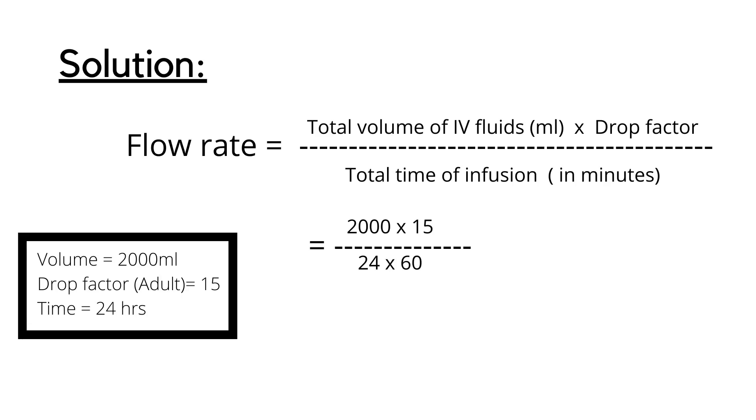So apply the formula: 2000 times 15 divided by 24 times 60, equals 30,000 divided by 1440, and the answer is 20.83 drops per minute.